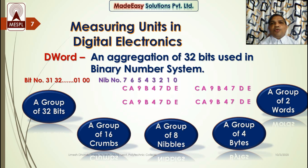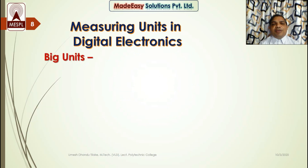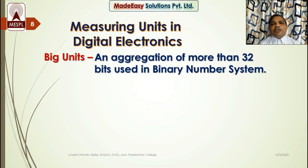Confused, my friends? Do not worry — it is easy. As I am reading it, you can also read it. Just practice at home because practice makes man perfect. We have some big units as well, just like kilo and mega in the decimal number system. An aggregation of more than 32 bits used in binary number system is referred to as a big unit. Let us see what types of big units we have.